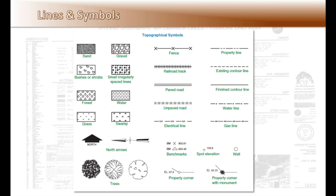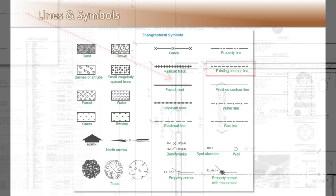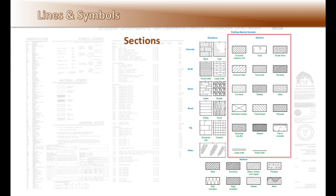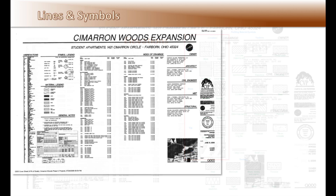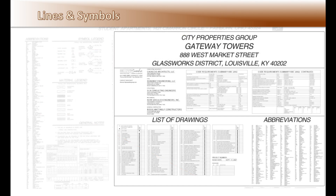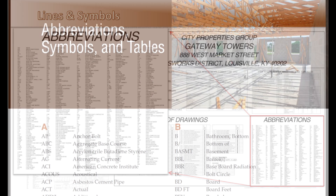The lines or symbols can mean different things based on the trades they are representing. For instance, a dashed line on architectural and structural drawings would mean a hidden line, but on the site plan it means existing contours. Materials can also appear differently depending on how they are shown in section or elevation. Most construction documents will have a legend defining the materials used in the drawings. Abbreviations are used to shorten commonly used words and should be standard for a set of drawings. Typically a list will be included on most construction drawings on the title page or general notes.